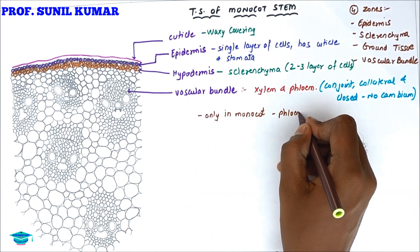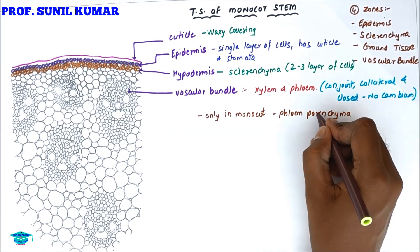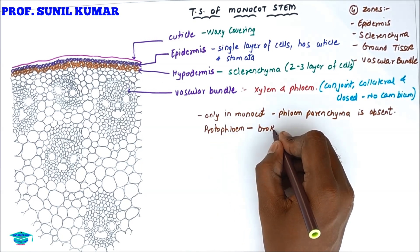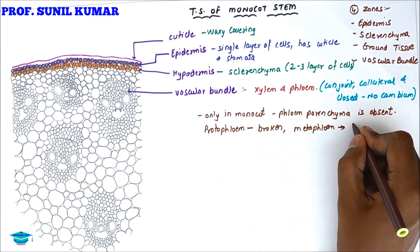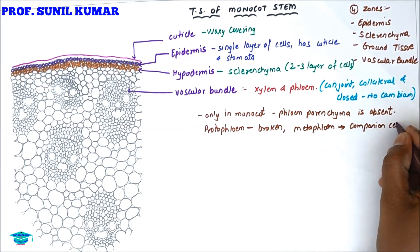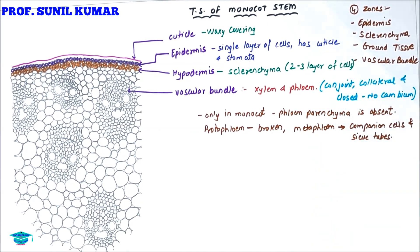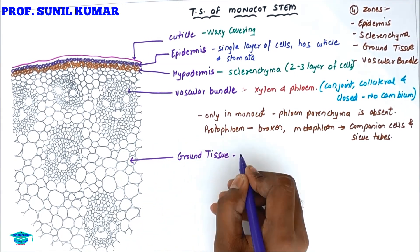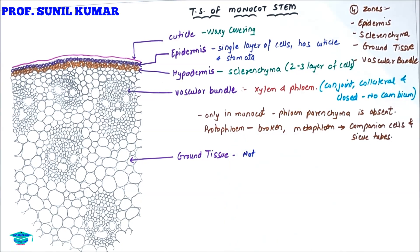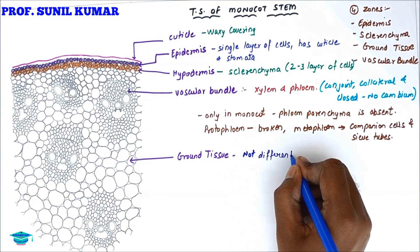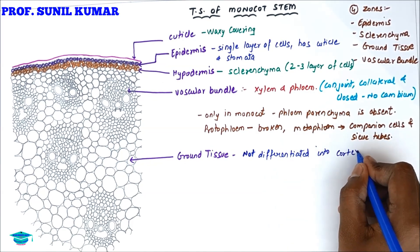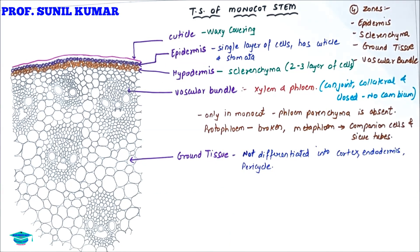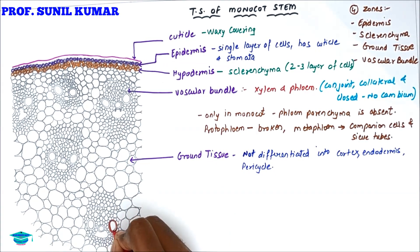In monocot stem, the phloem parenchyma is absent, the protophloem is broken, and the metaphloem consists of companion cells and sieve tubes. It's like a watermelon where the seeds are embedded in the red part — same is the case with vascular bundles scattered in the ground tissue. The ground tissue is not differentiated into cortex, endodermis, or pericycle.